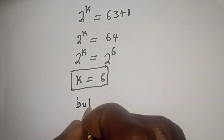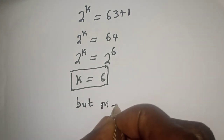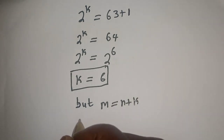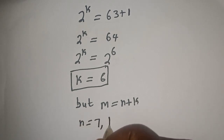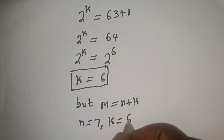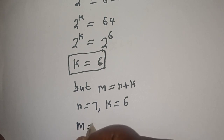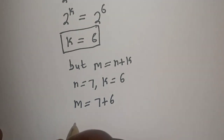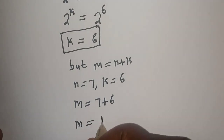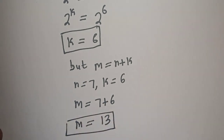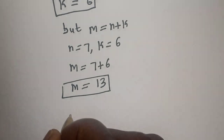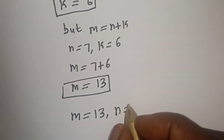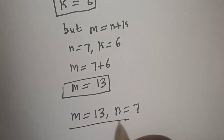But m is equal to n plus k. We found n equals 7 and k equals 6, so m equals 7 plus 6, which gives m equal to 13. Therefore, our final answers are: m is equal to 13 and n is equal to 7.